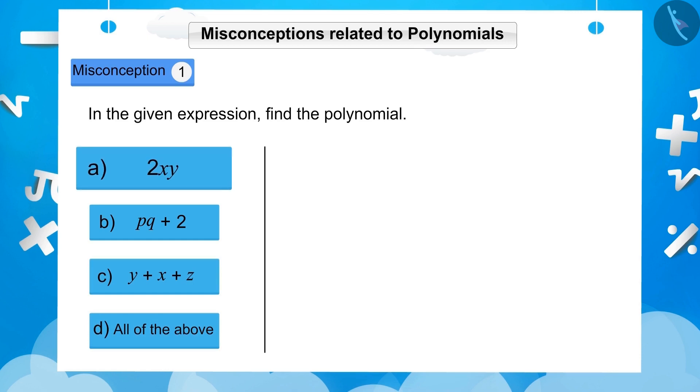a, 2xy. If you observe option a carefully, you will get to know that it is an expression which has a single term. As we had seen earlier, an expression which has one or more terms is called a polynomial.